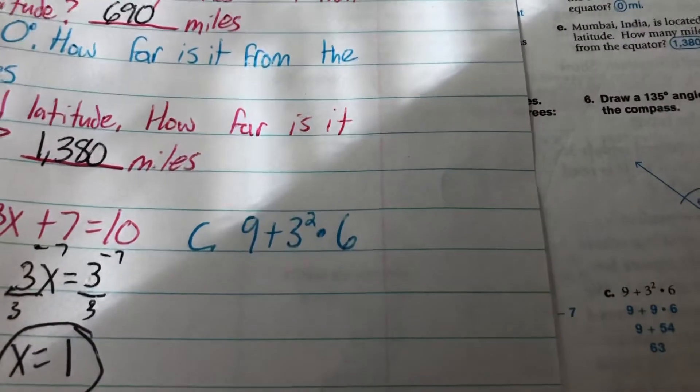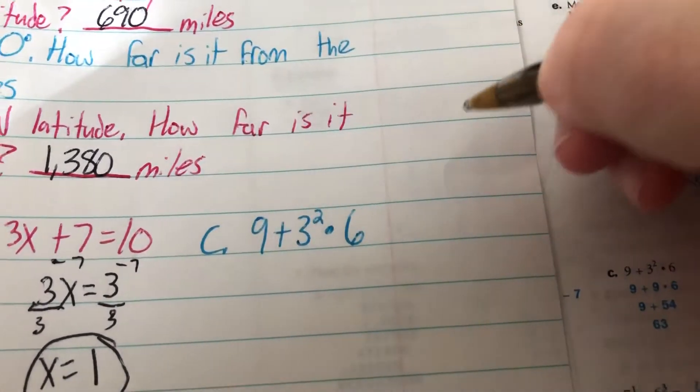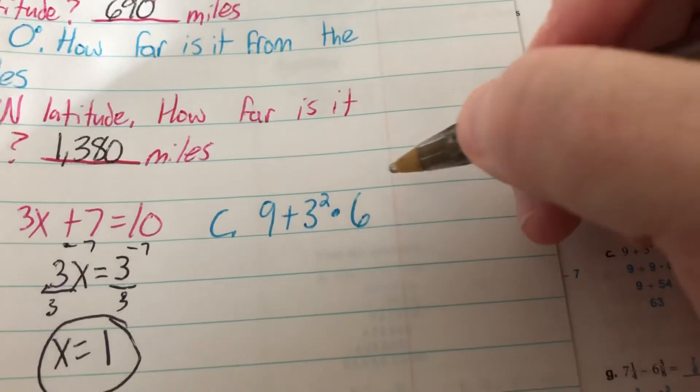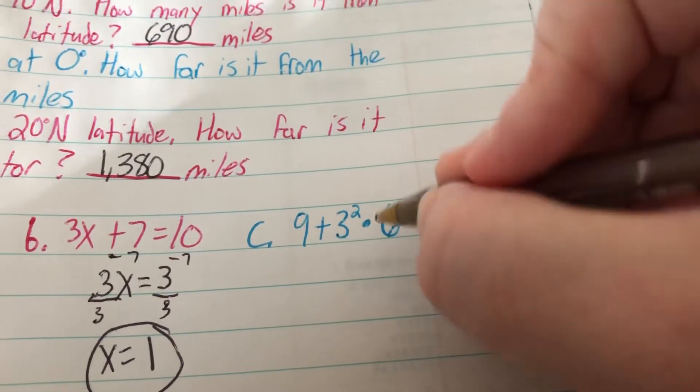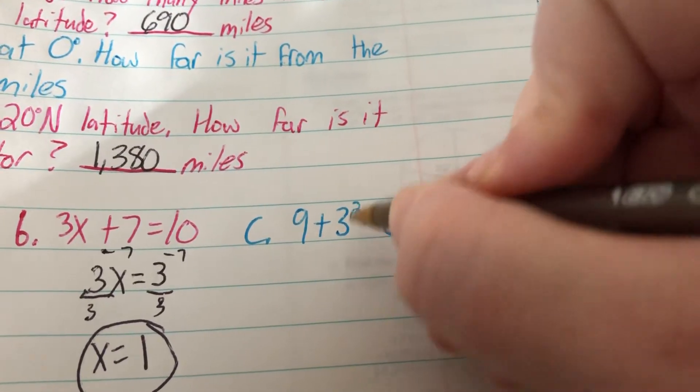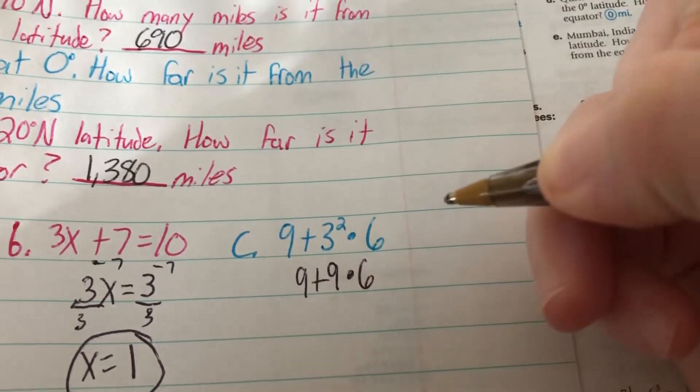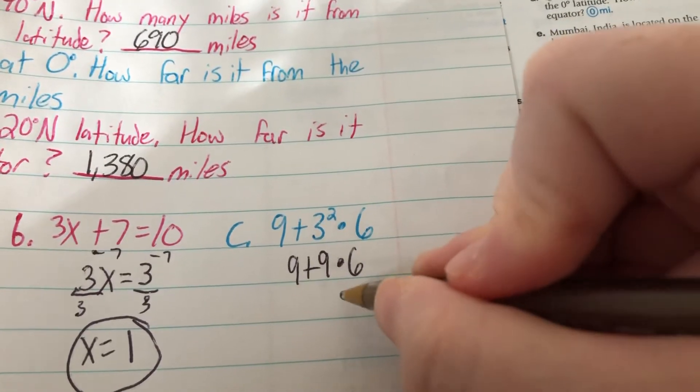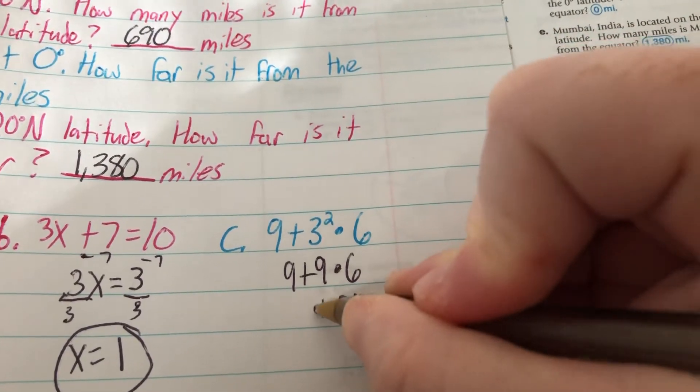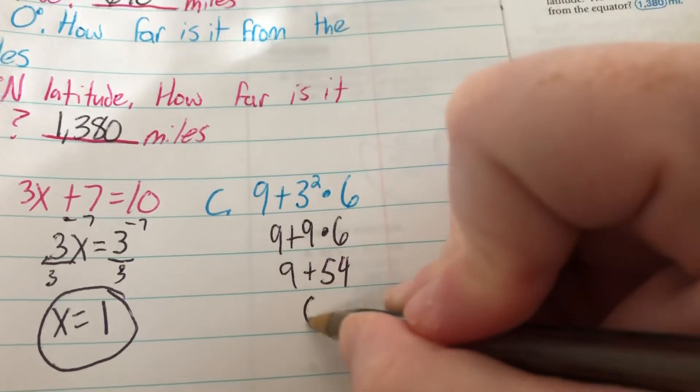And then C, 9 plus 3 squared times 6. Well, remember we do our PEMDAS, our Please Excuse My Dear Aunt Sally. There's no parentheses. So the first thing we do is exponents. So 3 squared, 3 times 3 is 9. So 9 plus 9 times 6. Then we do any multiplication and division. So then we do 9 times 6, which is 54, plus 9. 9 plus 54 is 63.